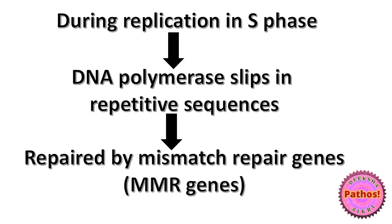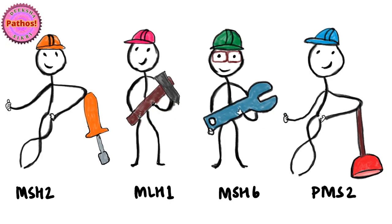This is what is usually repaired by mismatch repair genes, MMR genes. The four most important MMR genes are MSH2, MLH1, MSH6, and PMS2.